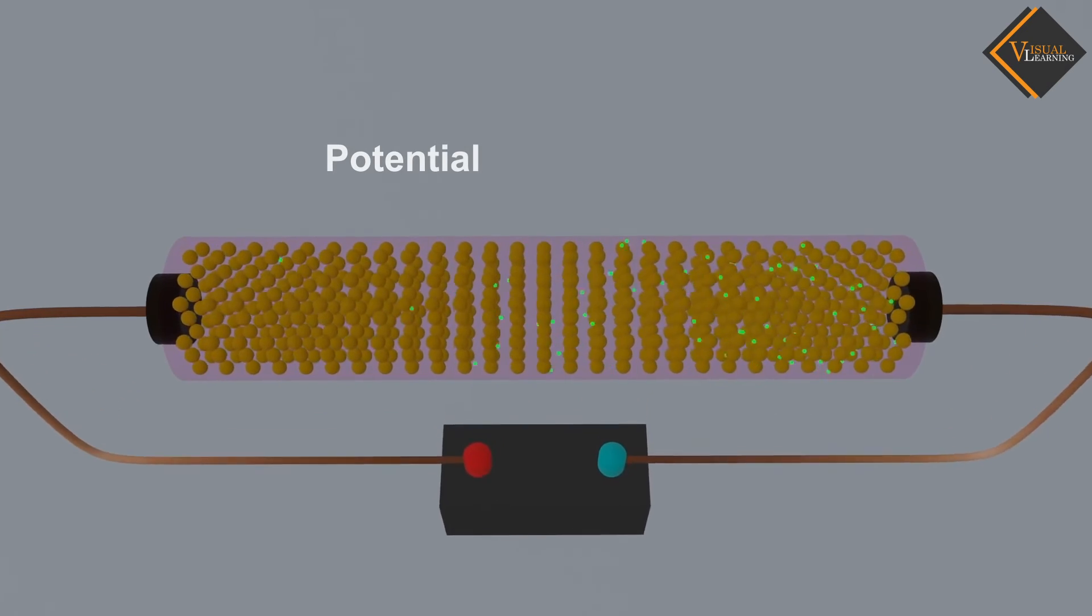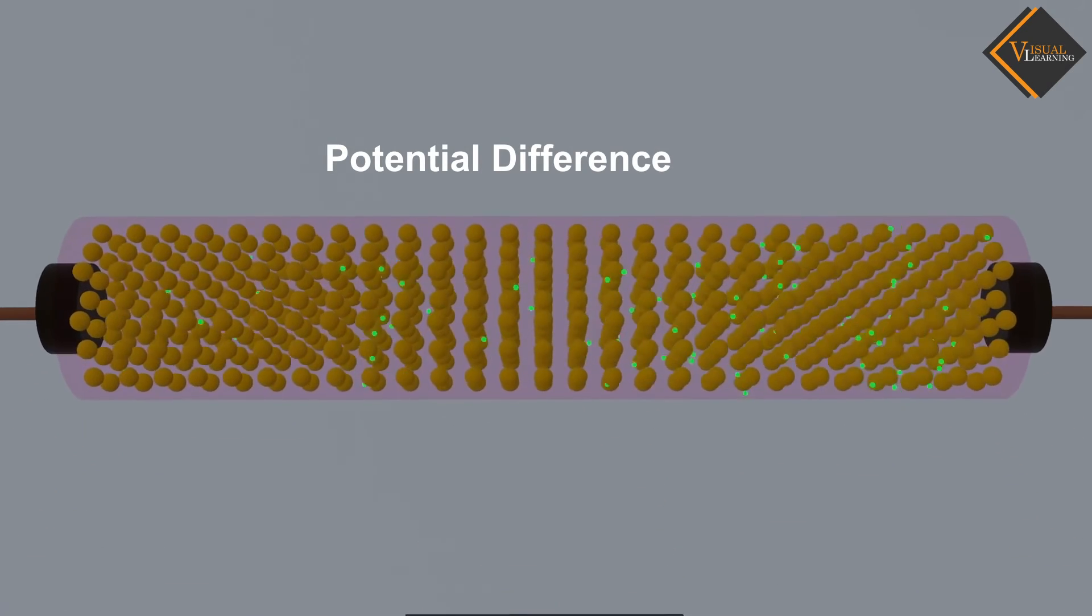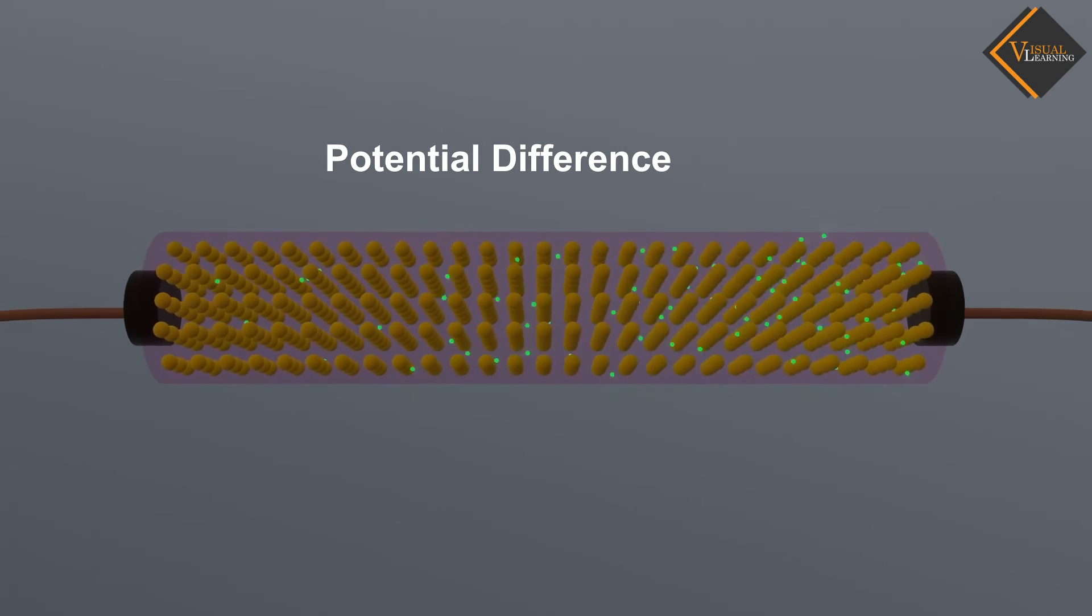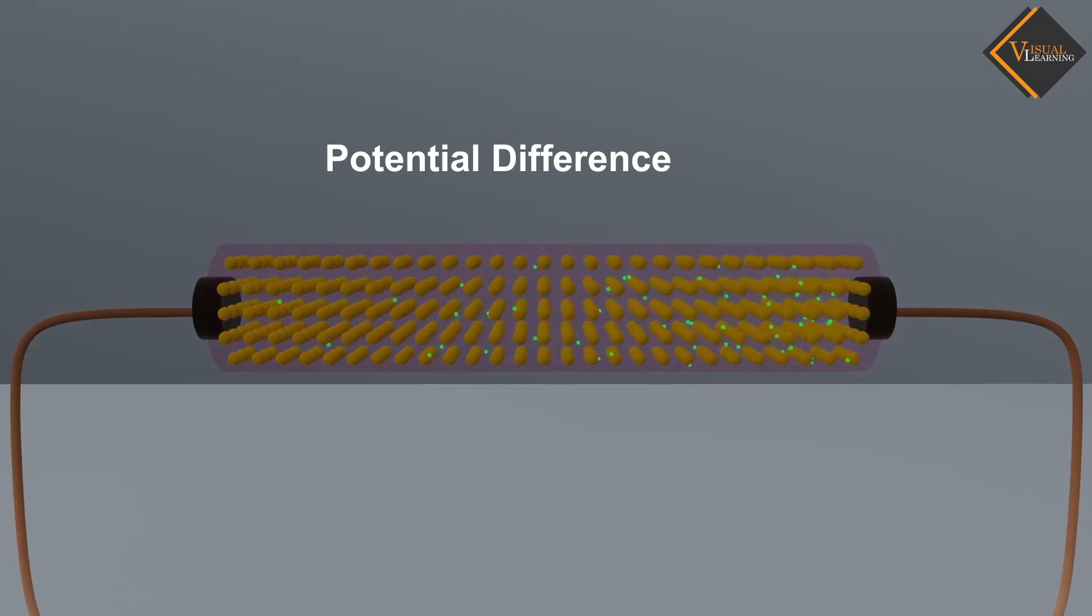When we apply a potential difference voltage to the conductor, the free electrons under the influence of the electric field move from one end of the conductor to the other.